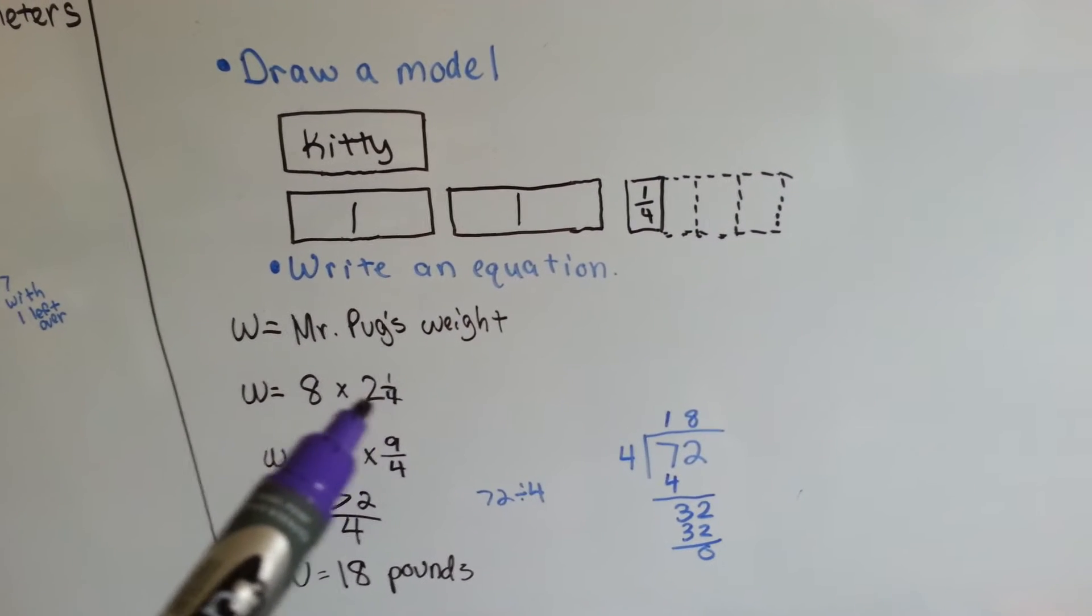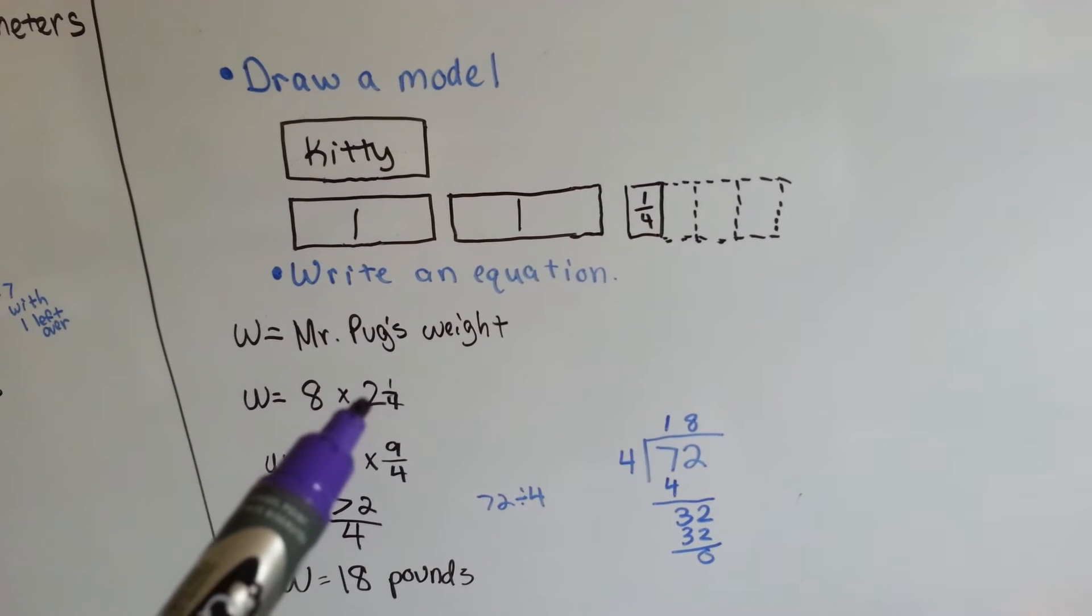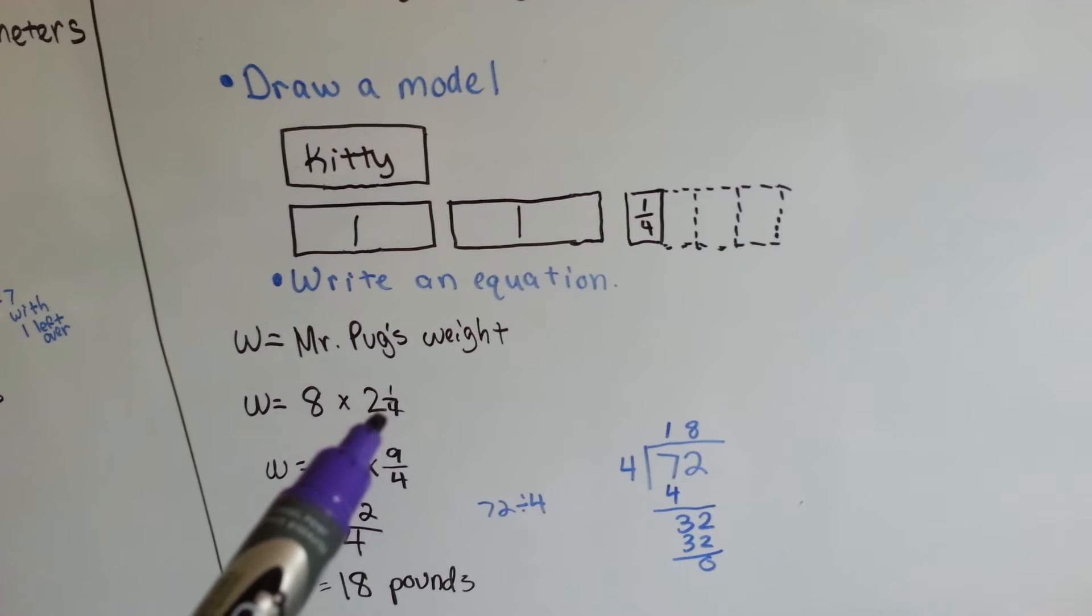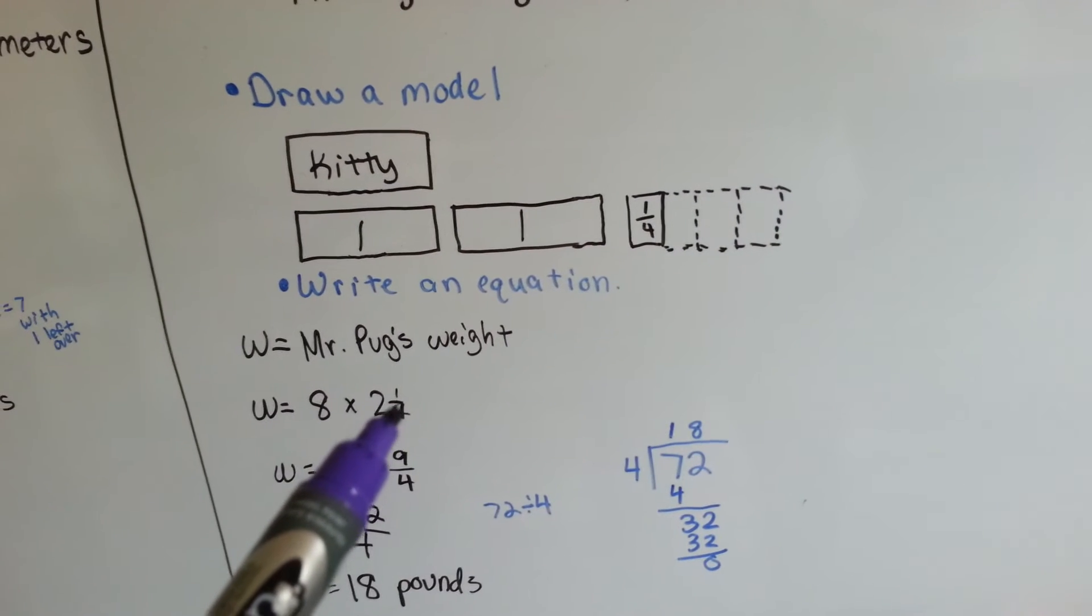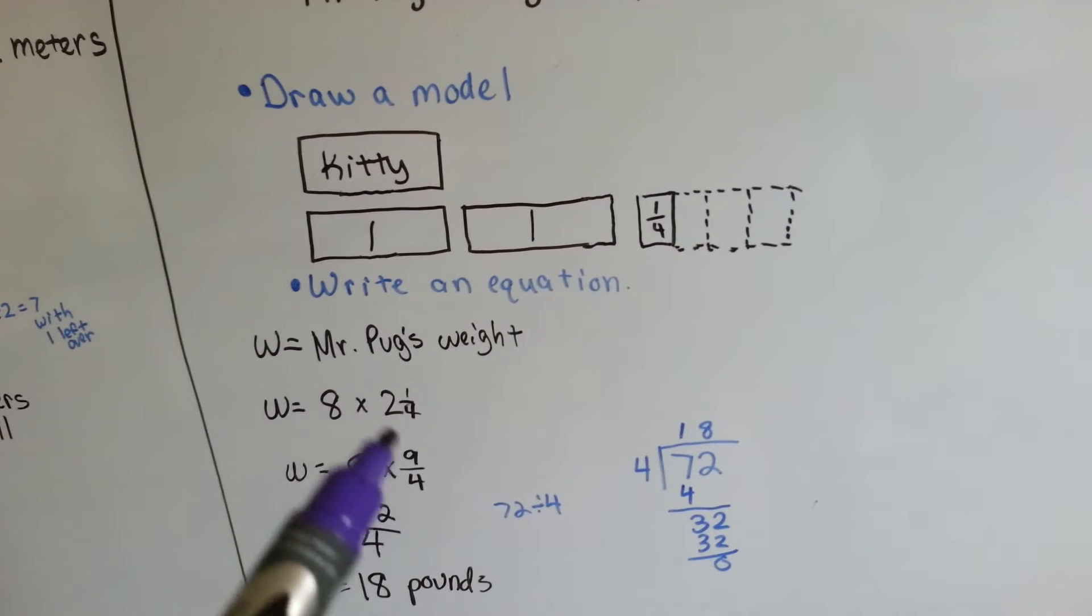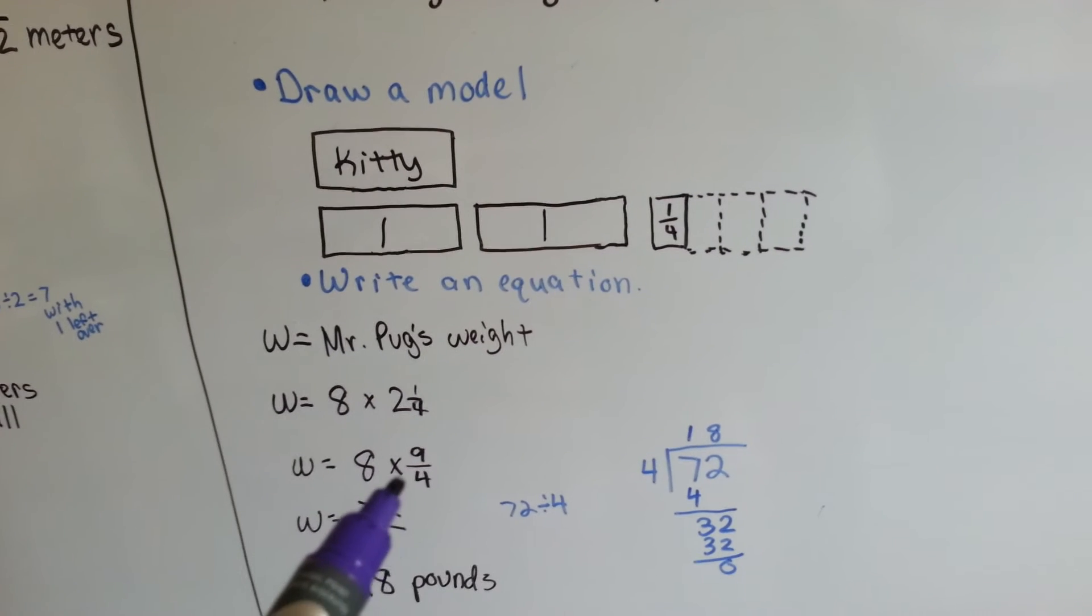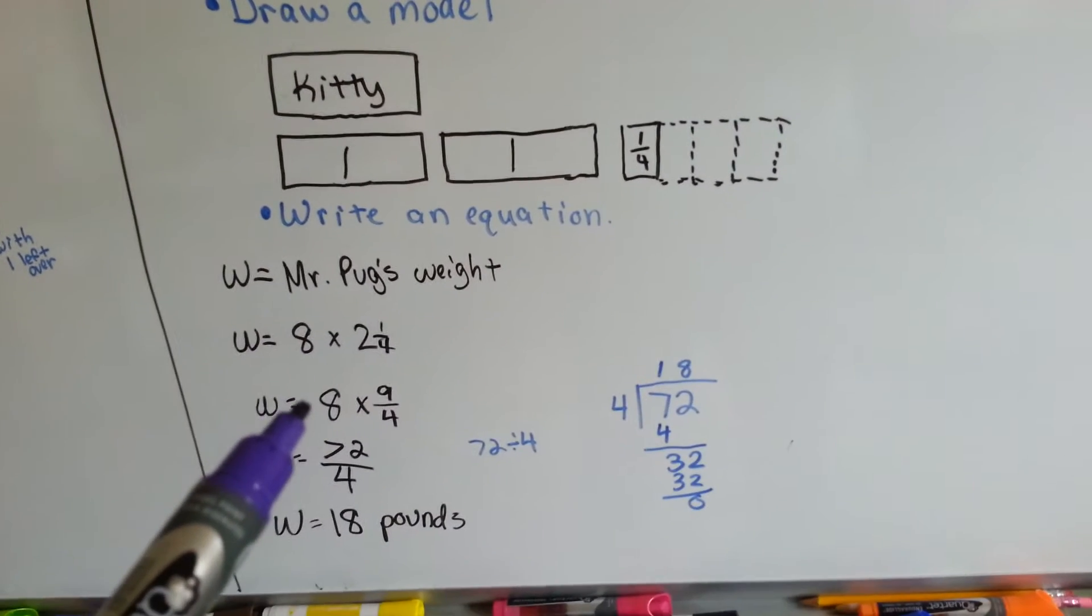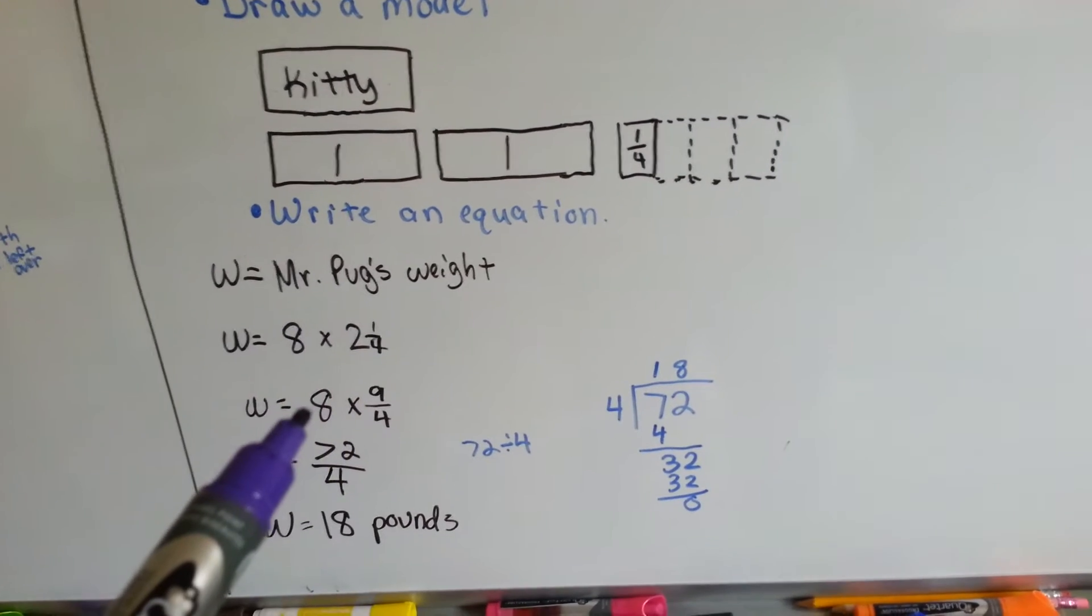We turn the two and one-fourths into a fraction. We multiply two times the denominator, which is eight. Two times four is eight. We add the one numerator and get nine. That gives us an improper fraction of nine-fourths. Now we need to do eight times nine-fourths.